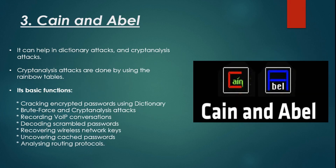So let's move on to the next tool: Cain and Abel. Cain and Abel helps in cracking various kinds of passwords by performing brute force attacks, dictionary attacks, and cryptanalysis attacks. Cryptanalysis attacks are done by using rainbow tables, as mentioned with the previous tools.